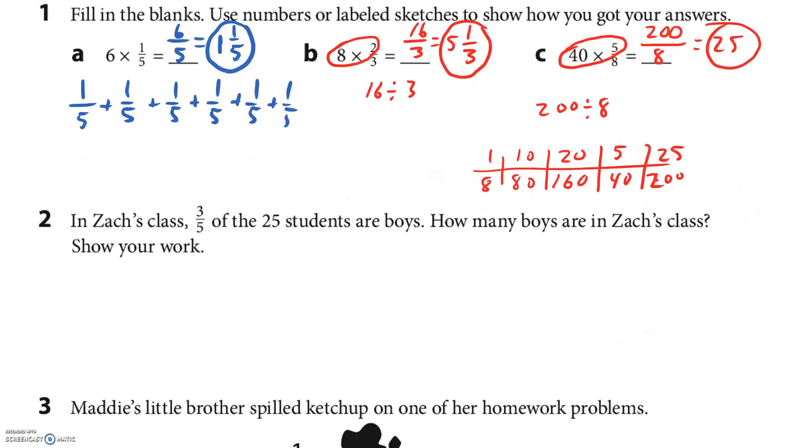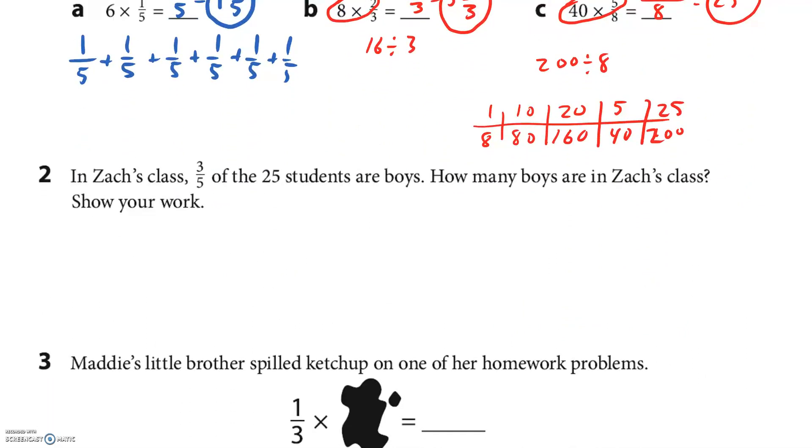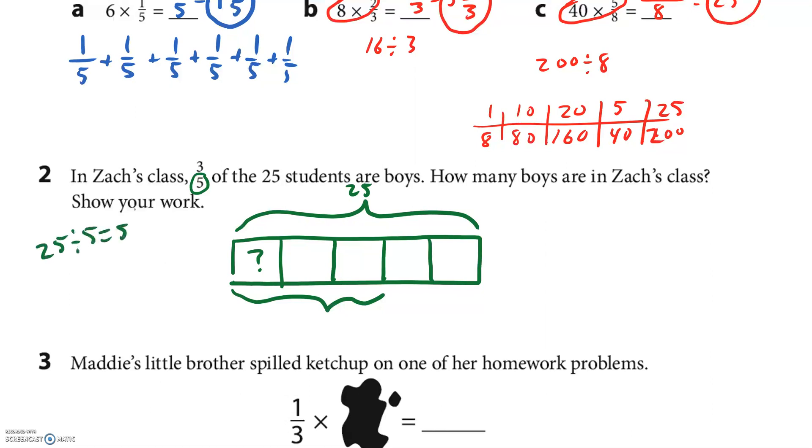Number two. Maybe I'll change colors in this one. In Zach's class 3/5 of the 25 students are boys, so I'm gonna turn it the other way around. I'm gonna draw my 25 students, I'm not gonna draw out 25 students. This whole thing is 25. I'm gonna break it up into five pieces. So 1, 2, 3, 4 lines, and then we need three of them. So if I were to find this right here, that's 1/5.